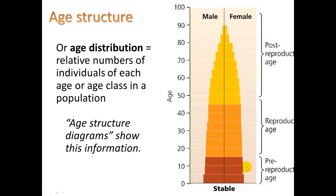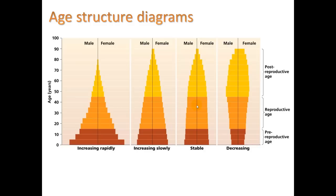The age structure diagram is also broken down into pre-reproductive age, reproductive age, and post-reproductive age. For humans, that's in the mid-40s, where menopause typically kicks in. This can tell us a lot of information, because depending on the shape of it, we can make some predictions.